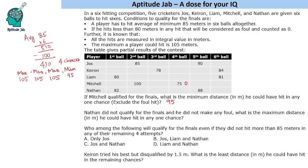Next question: Nathan did not qualify for the finals and did not make any foul. What is the maximum distance he could have hit in any one chance? Since he did not qualify, his total will be 509, because at 510 the average reaches 85.